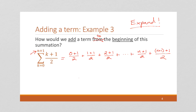What would that new term be? We started at 0, so adding a term to the beginning would be k equals negative 1 — we have to go one further back. We currently go from 0 to n+1; now we're going to go from negative 1 to n+1. So that term would be (-1+1)/2, which is 0.